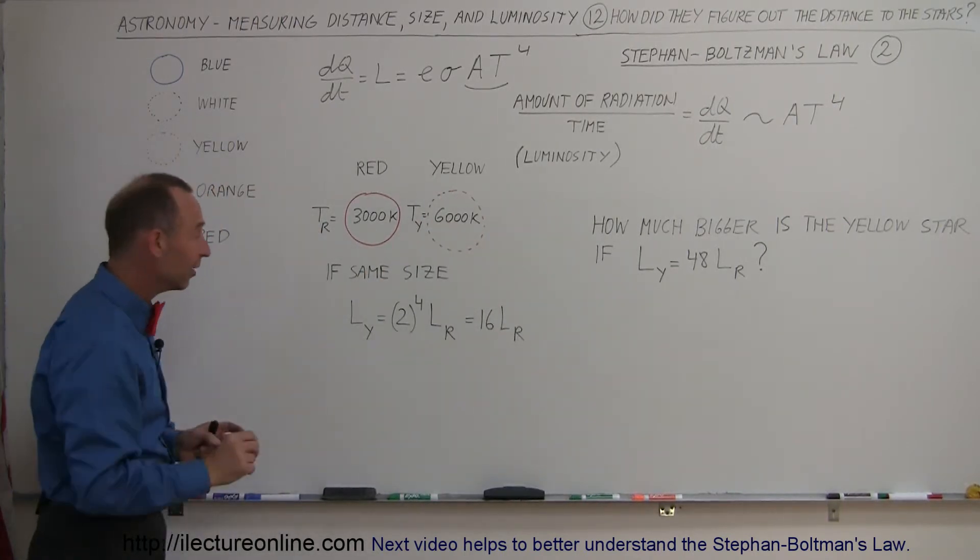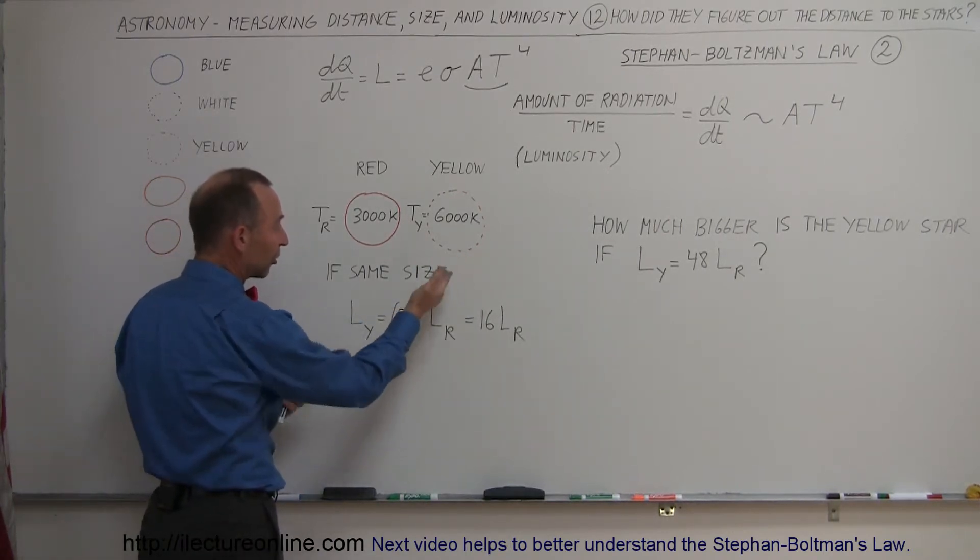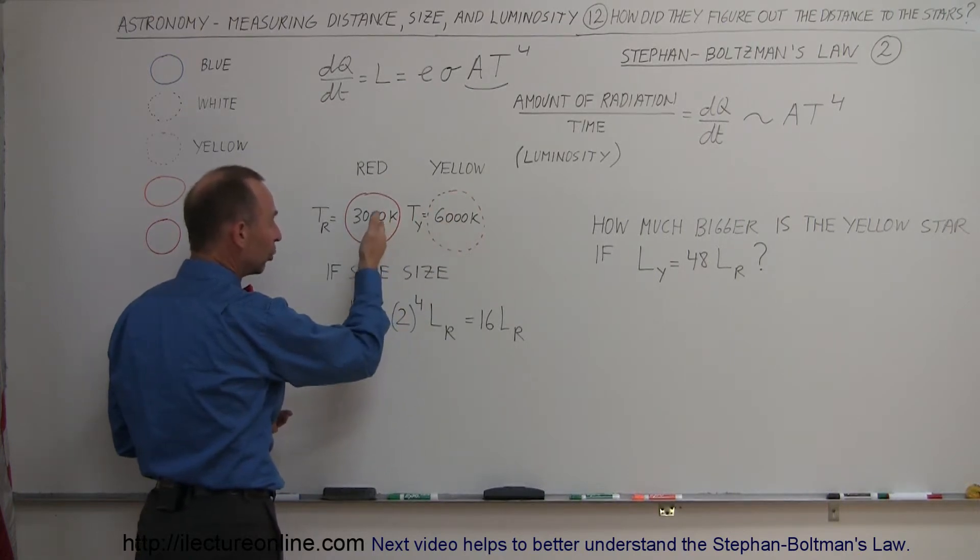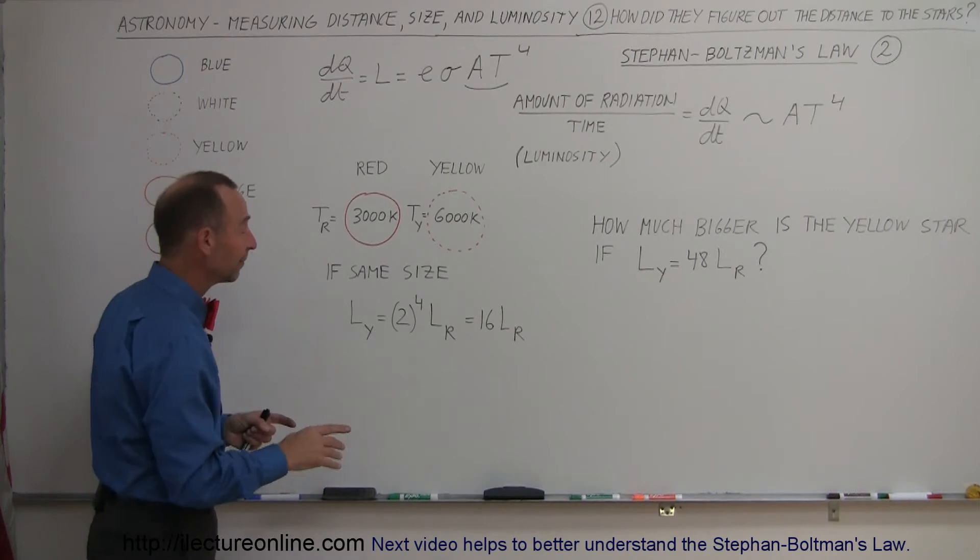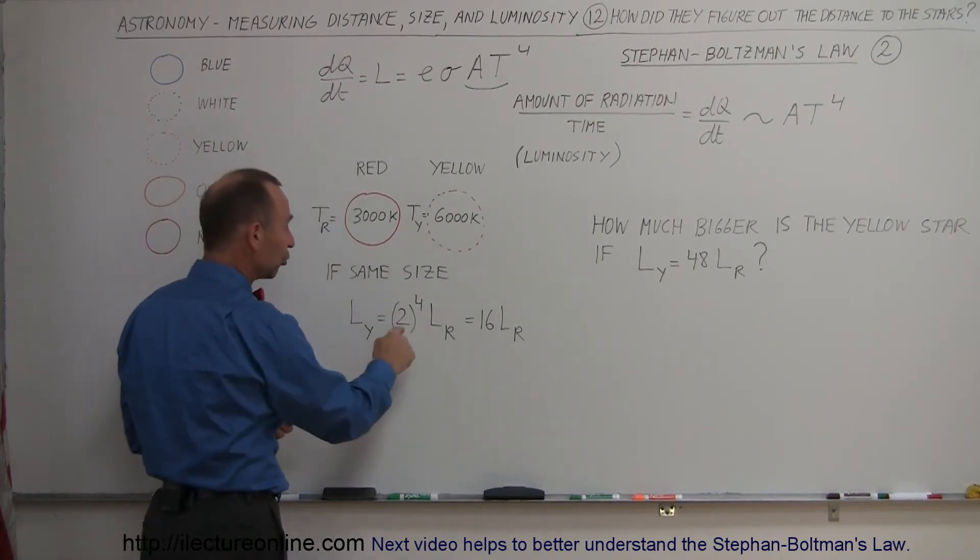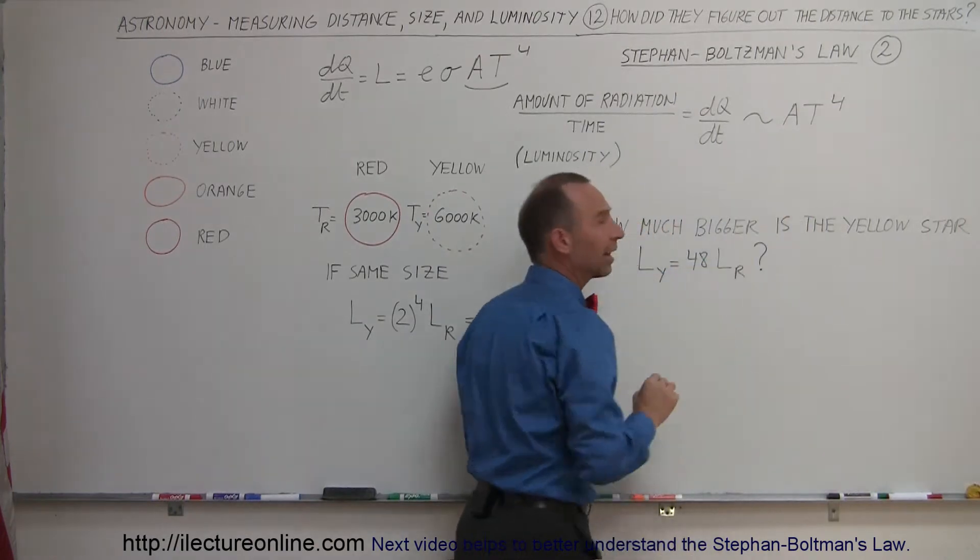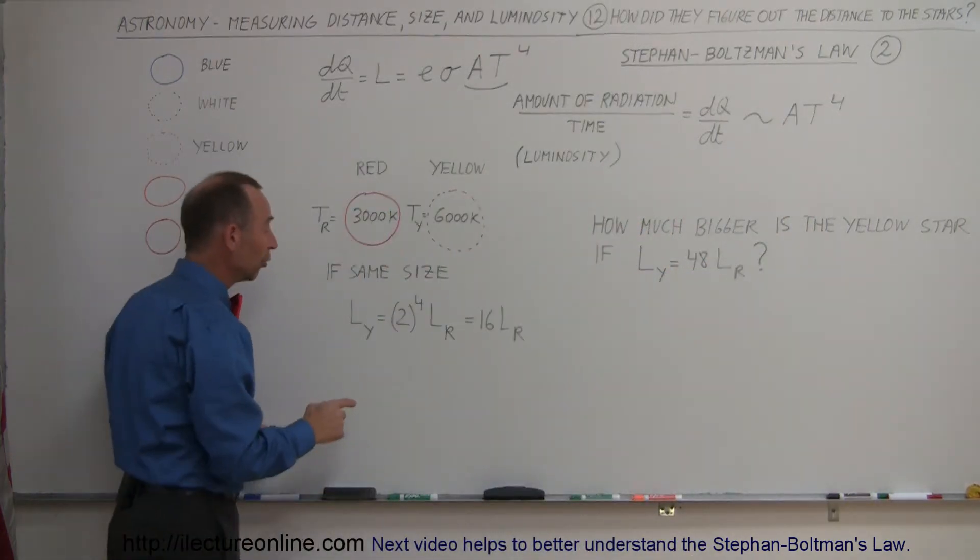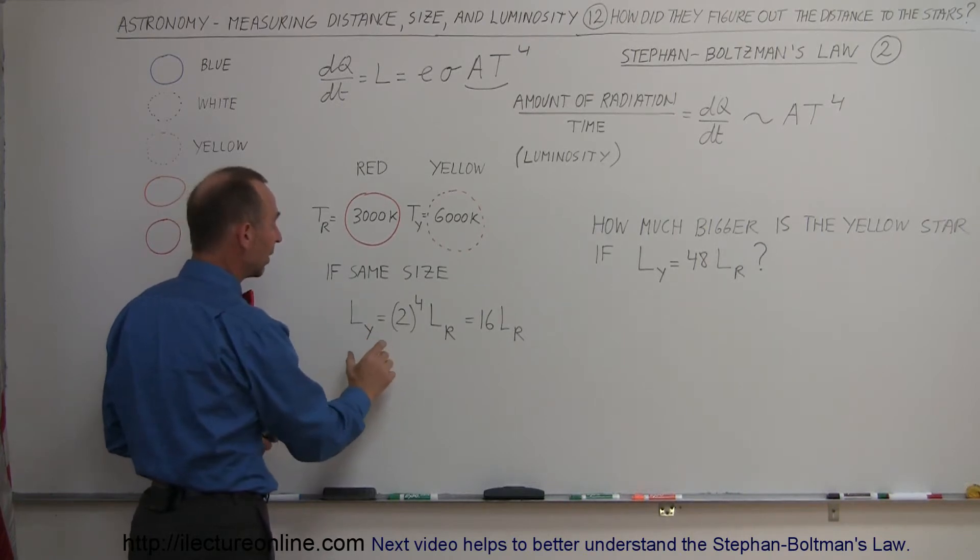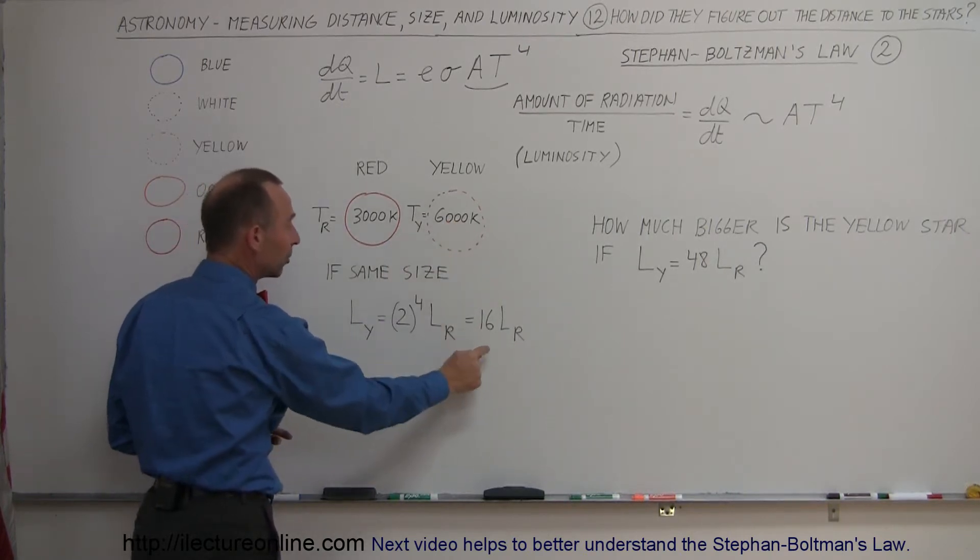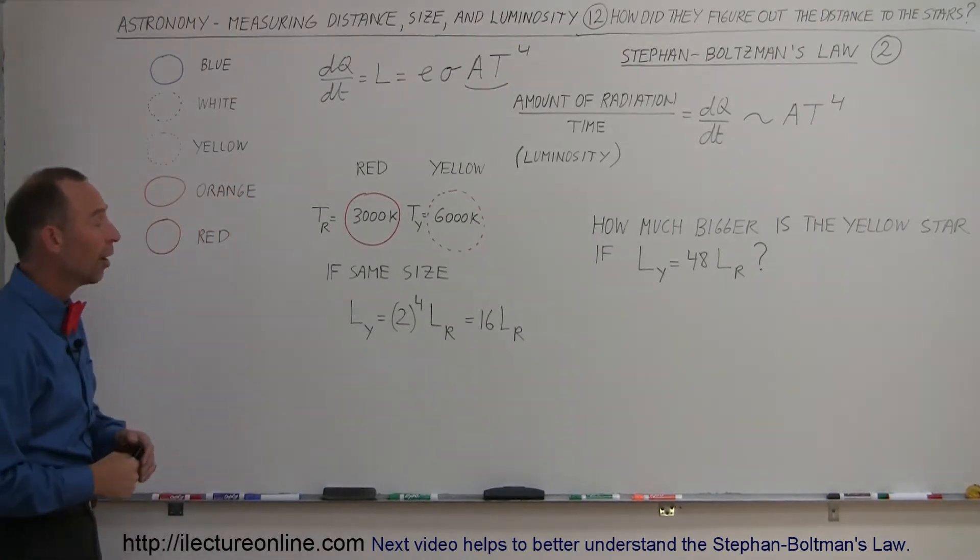If they're the same size, you can then say that the luminosity of the hotter star will be - since the hotter star is twice as hot as the cooler star, I shouldn't say cold star because 3000 degrees is still very hot - but if the ratio of the temperature is two, I take two to the fourth power because that's what it says right here. The proportionality is temperature to the fourth power, so if it's twice as hot I take two to the fourth power. That means I would expect the yellow star, the hotter star, to put out 16 times as much radiation or 16 times the luminosity of the red star.